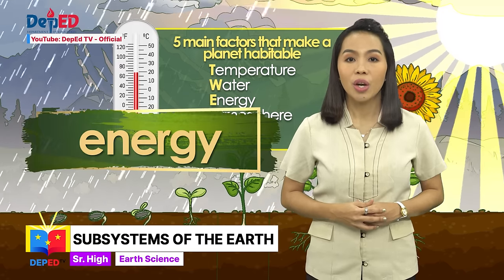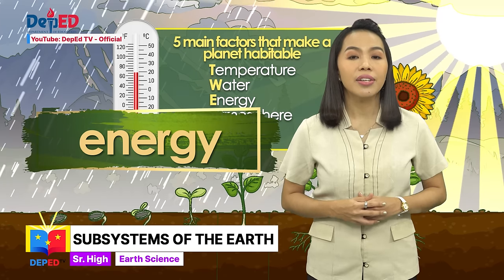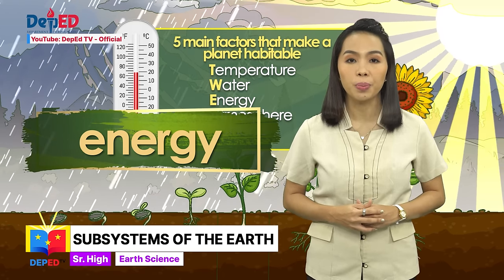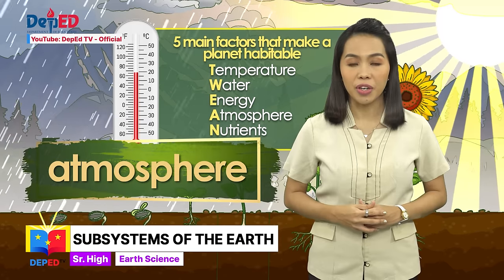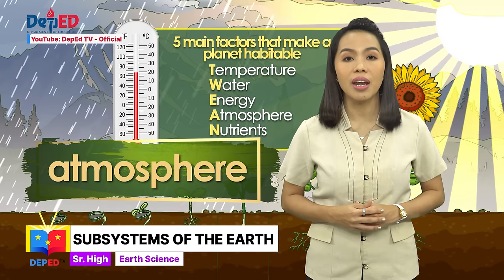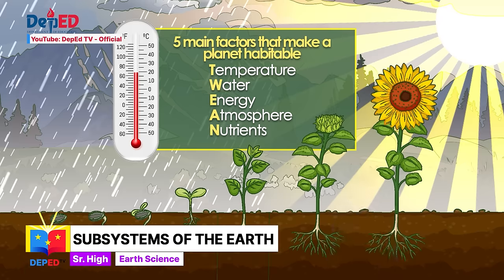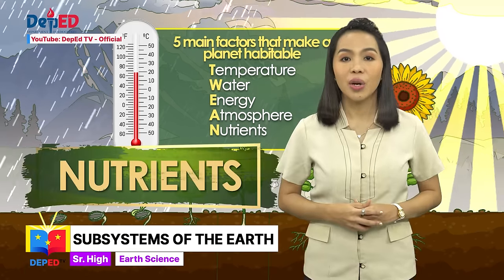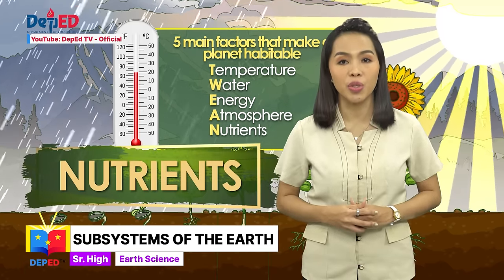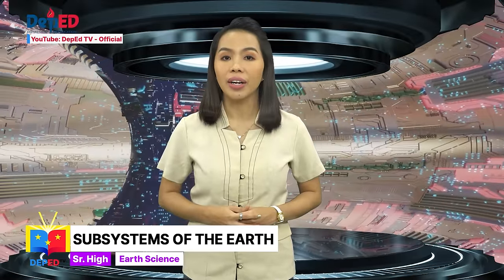E — Energy. With a steady input of either light or chemical energy, cells can run chemical reactions necessary for life. A — Atmosphere; it keeps the surface warm and protects us from radiation and small to medium-sized meteorites. N — Nutrients; they are essential factors used to build and maintain organisms' body structure.